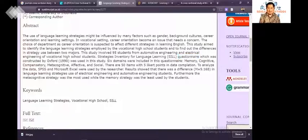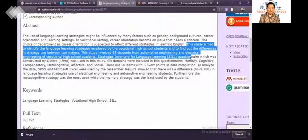The study aimed to identify the language learning strategies employed by the vocational high school students and to find out the differences in strategy used between two majors. The study involved 95 students from automotive engineering and electrical engineering students. The research was only to find types of learning strategies used by students. It was a one shot research. The data was taken only once.